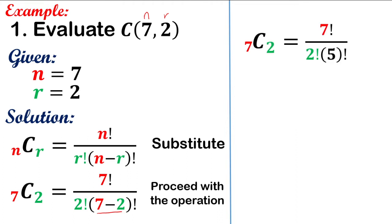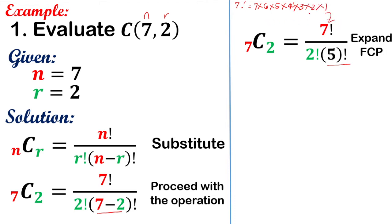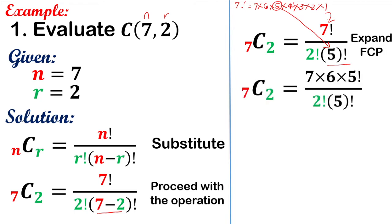We have 7 factorial over 2 factorial times 5 factorial. We need to expand 7 factorial in such a way that 5 factorial will be eliminated. Since 7 factorial equals 7 times 6 times 5 factorial, we expand it as 7 times 6 times 5 factorial. Then 5 factorial divided by 5 factorial equals 1, so we cancel them out. 2 factorial is 2 times 1.